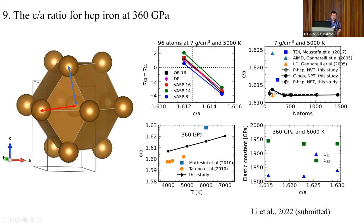Our results are consistent with the previous thermodynamic integration method but show a large discrepancy compared to the stress-based method. We couldn't determine the exact cause of this discrepancy, but we can confirm our simulations are converged. Comparing with experiments, our c/a ratio is larger than the experimental values. However, these experiments are very difficult — sometimes you only have around two diffraction peaks, and with only two diffraction peaks it is very hard to evaluate the error in the c/a ratio.